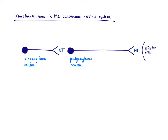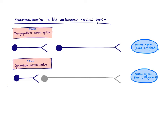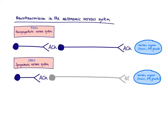In this video, I want to talk about neurotransmission in the autonomic nervous system — how signals are propagated. We are dealing here with a two-neuron system: a pre-ganglionic neuron releasing a neurotransmitter onto a post-ganglionic neuron, which then releases a neurotransmitter at the neuro-effector junction. This two-neuron system applies to both the parasympathetic and sympathetic nervous systems, though the sympathetic has shorter pre-ganglionic and longer post-ganglionic neurons.